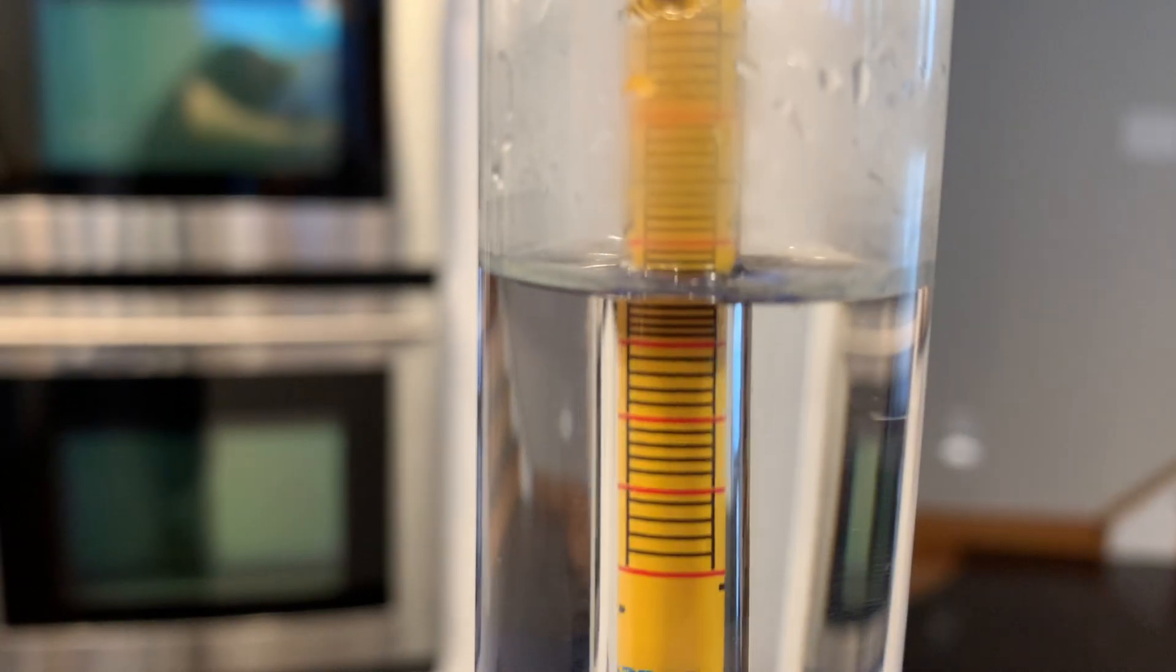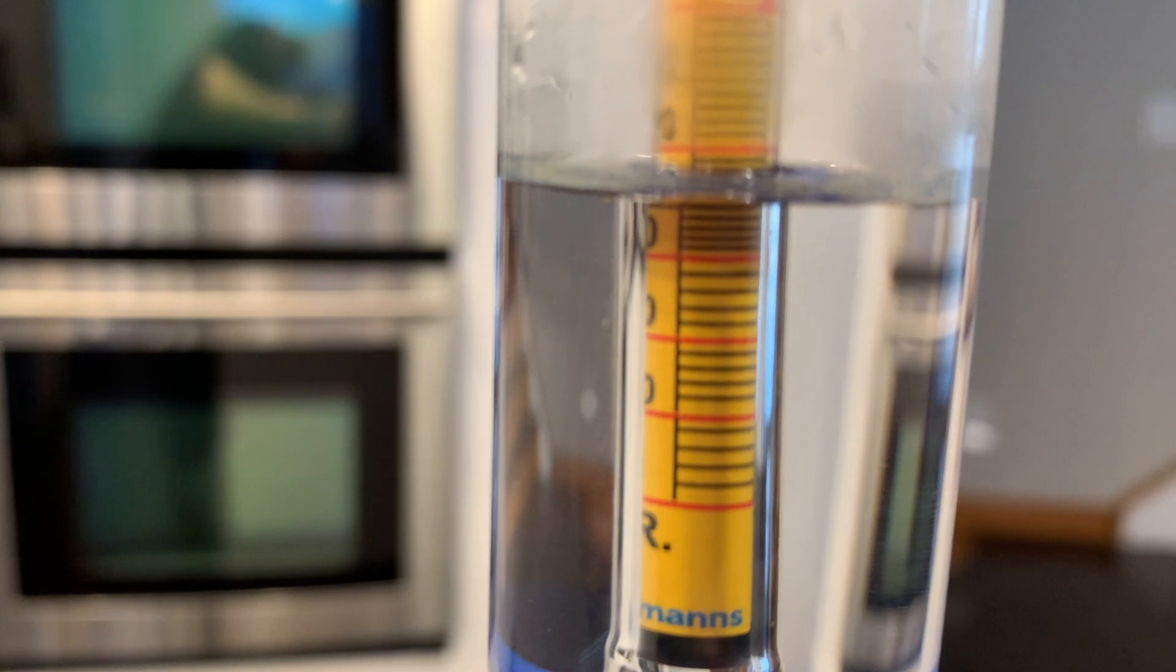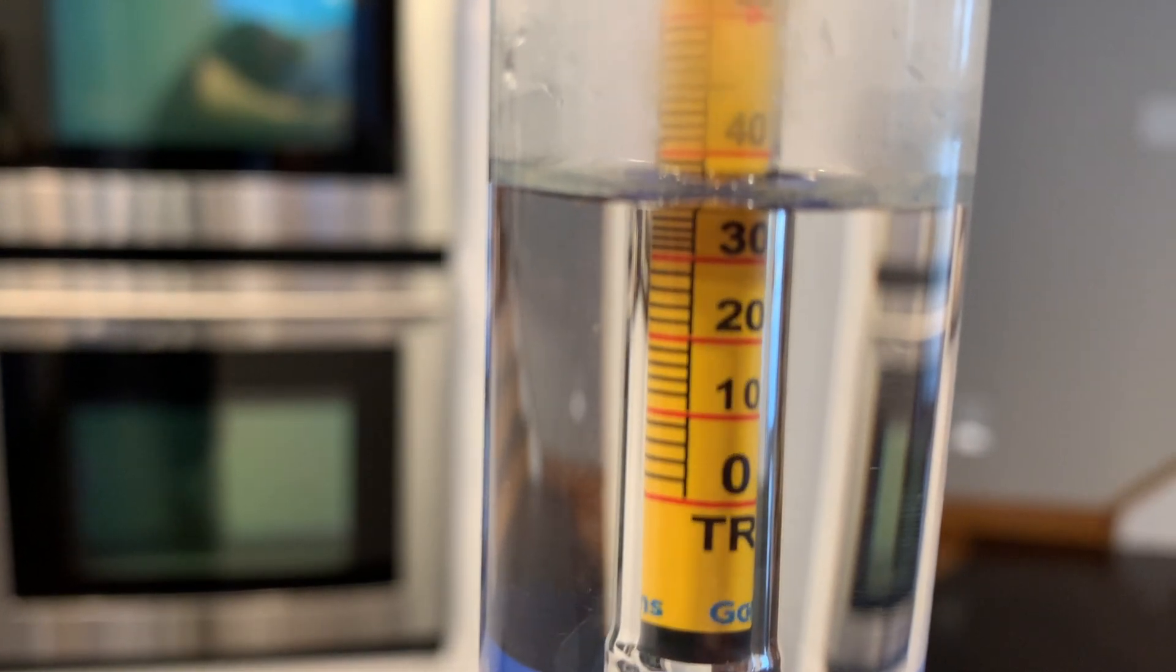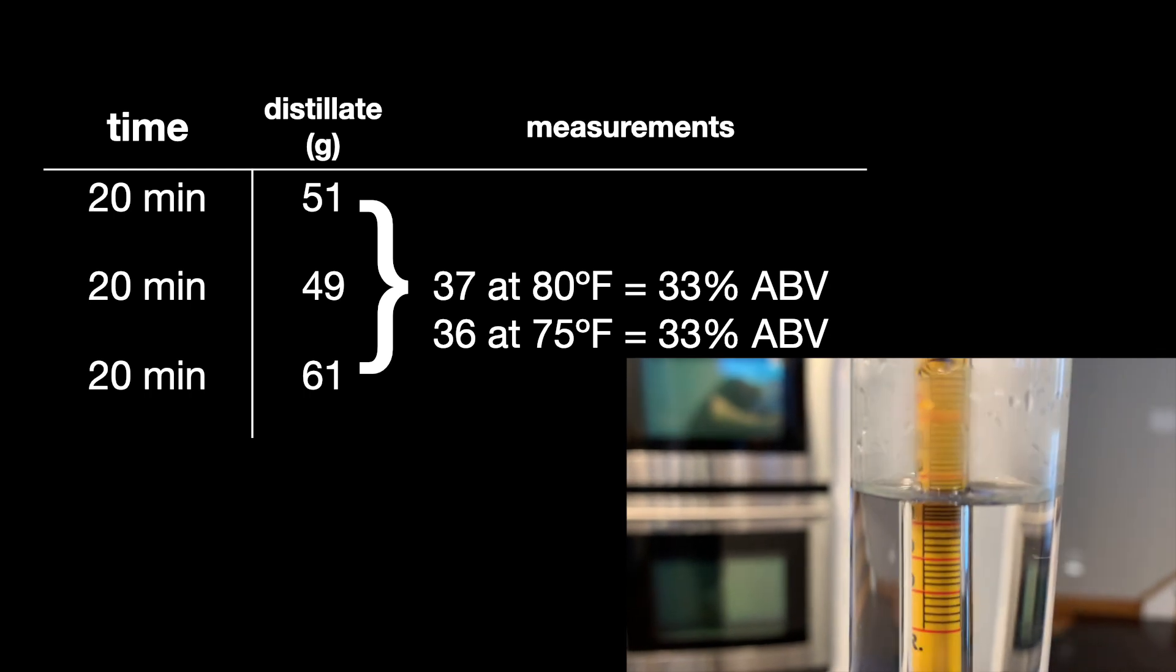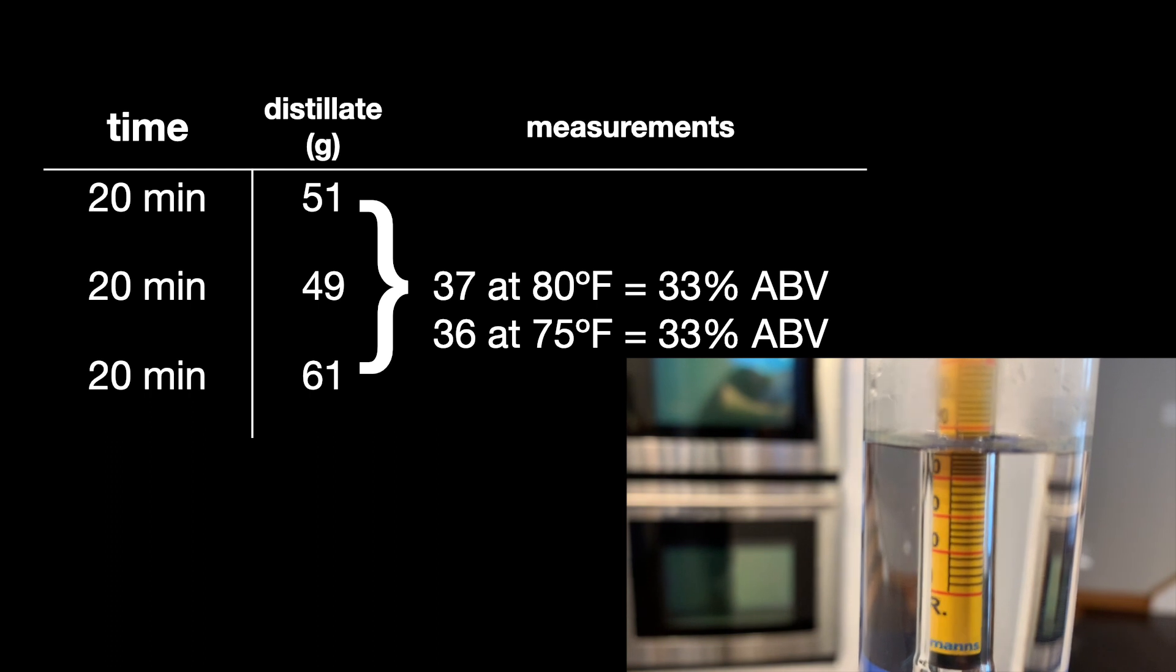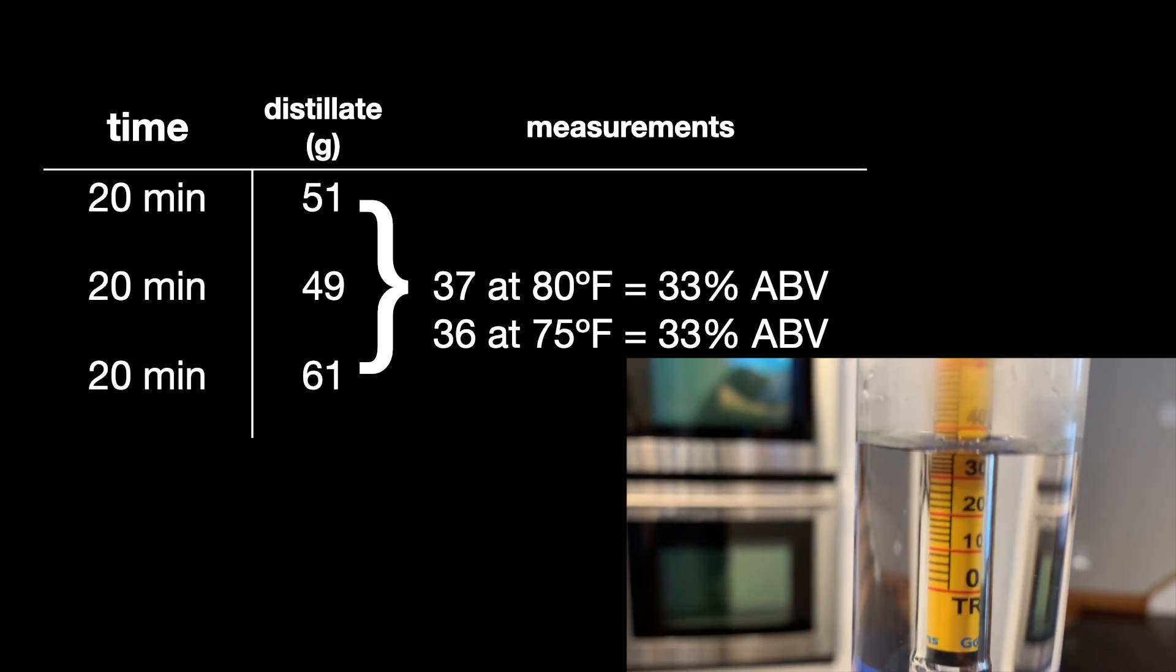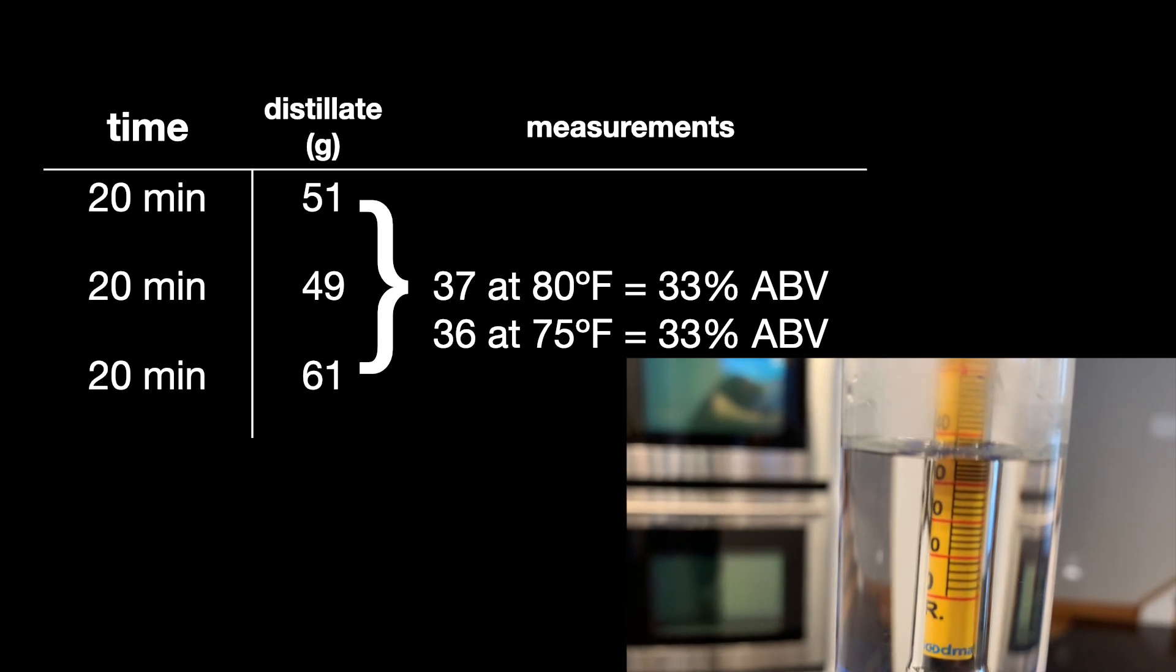Now I'm going to wait for the temperature of the liquid to drop to 75 degrees, so I can check it again. And now it looks like my reading, my raw reading is about 36. Now I have to adjust that down by three percentage points. So again, 33. So luckily that's consistent. So that's my first measurement.